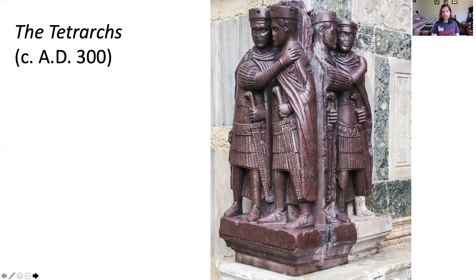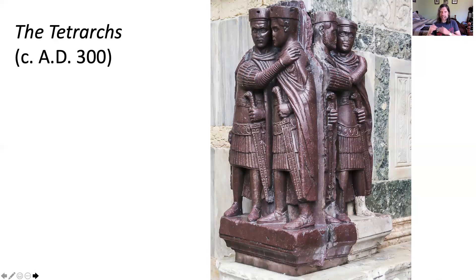One other thing to say about this sculpture from an artistic point of view: if you compare it to earlier examples of Roman sculpture, you'll see that it doesn't really have the naturalistic anatomy or proportions you would expect from classical Greek or even Hellenistic art. You look at these figures — they don't really have necks, they're kind of stubby. The emperor on the far left embracing the other emperor has a shoulder that's kind of too low. They're sort of stubby and squat, reflecting the fact that as we get into the late Roman period, sculpture becomes less naturalistic and a bit more stylized and artificial.